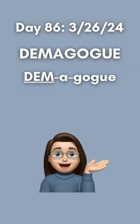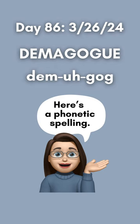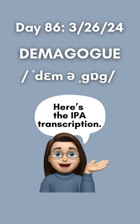Here's a phonetic spelling of demagogue, and here's the IPA transcription, showing primary stress on the first syllable dem and secondary stress on the third syllable gog.